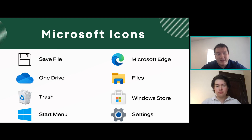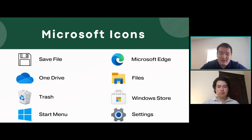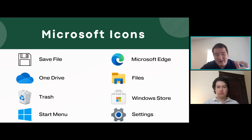Then we have the Files icon — that's where you can see everything you've downloaded, whether photos, PDFs, or anything else. You can sort them alphabetically, by recency, or however you like. Next is the Windows Store, which is where you download and find all the apps you want on your computer. Some are free, some are not. Even if you're downloading something free, it might ask for a credit card to put on file — that doesn't mean they'll charge it; they just keep it on file for future purchases. Finally, the Settings icon is generally a gear shape across all platforms.